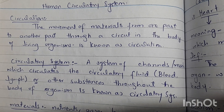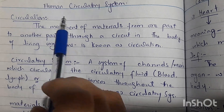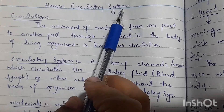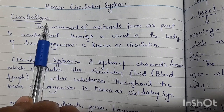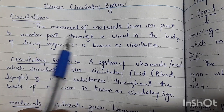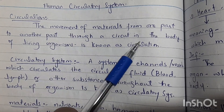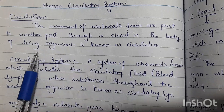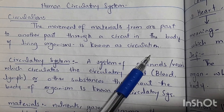Students, today we will start the next chapter. Today we will study the introduction of the human circulatory system. First of all, let's understand circulation. Circulation means the movement of material from one part to another part through a circuit in the body of living organisms is known as circulation.